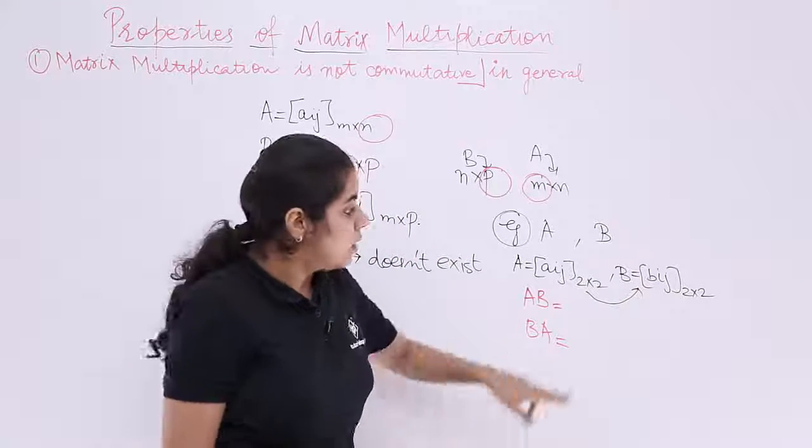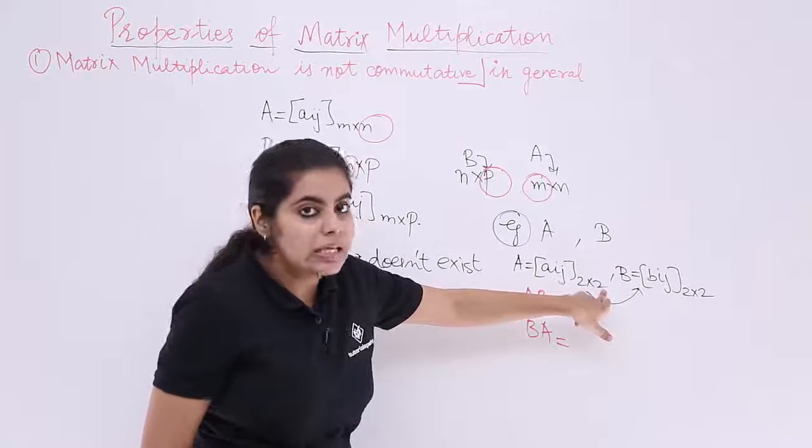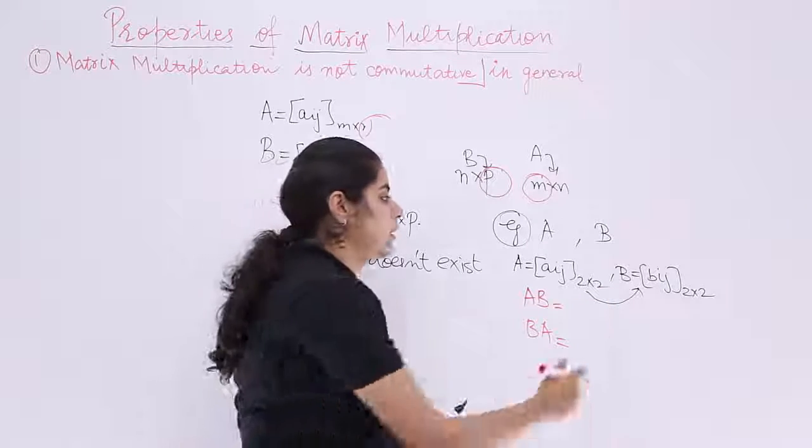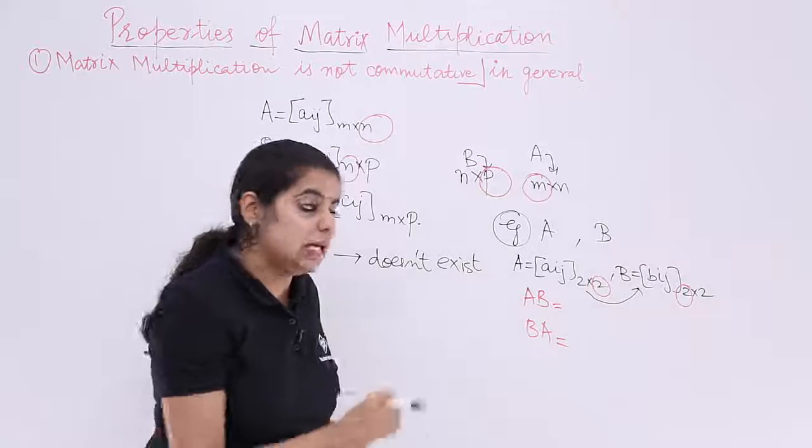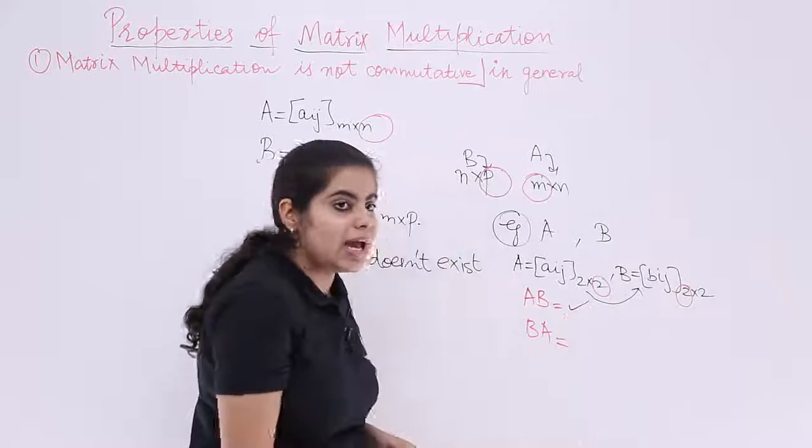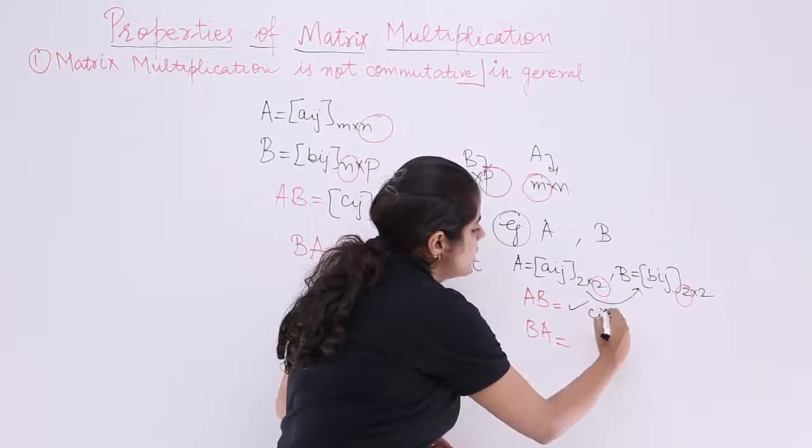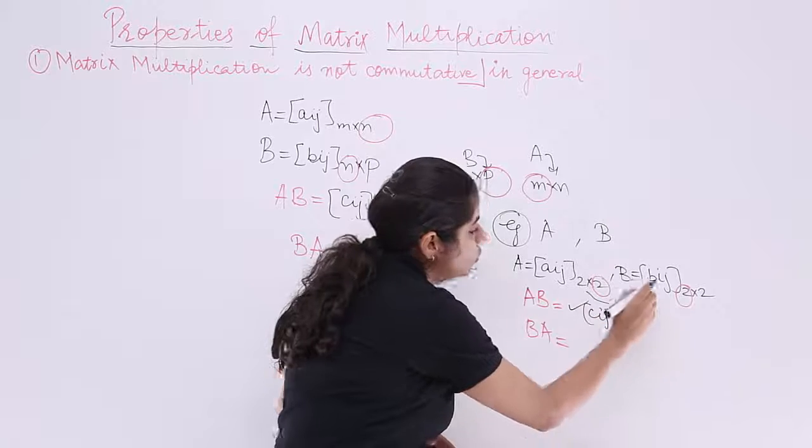First A, then B. The first matrix is the pre-multiplier. A is the pre-multiplier. The number of columns of A is equal to number of rows of B. Yes, it exists. And the answer would be a matrix say C_ij with the order 2×2.